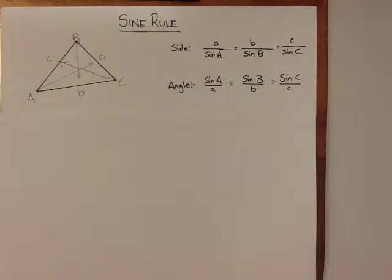The sine rule is what we use when we don't have a right angle triangle, and the four pieces of information that we have consist of two sides and two angles, with one of these pieces of information being unknown. It is important to know how to label the sides of a triangle.